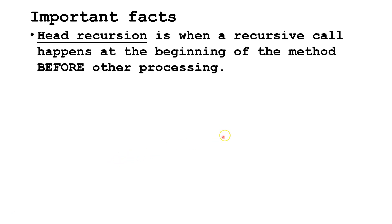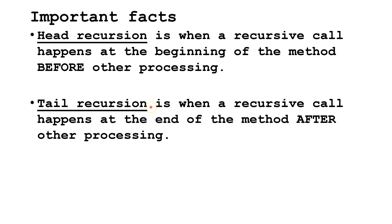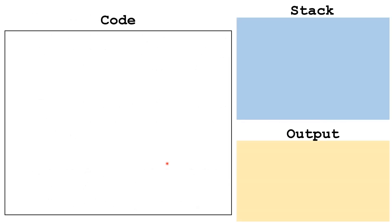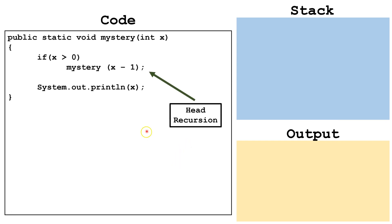In this Java tutorial, we are going to learn about head and tail recursion. Head recursion is when a recursive call happens at the beginning of the method before other processing. Tail recursion is when a recursive call happens at the end of the method after other processing. There are other circumstances where a recursive call may happen both before and after other processing. Let's write some code for head recursion — we see the recursive call is at the top, or the head, of the method, before the other processing.